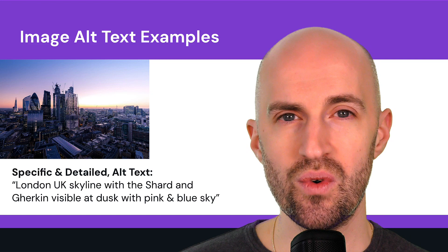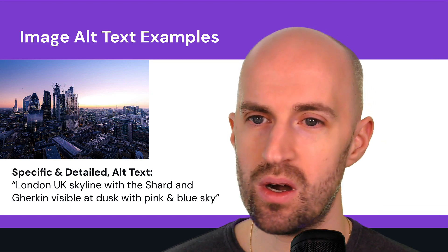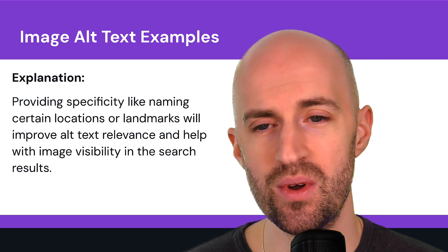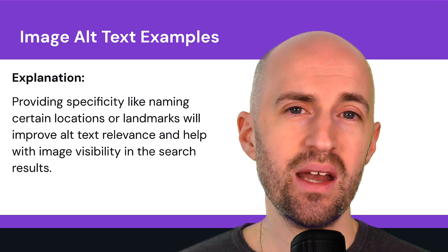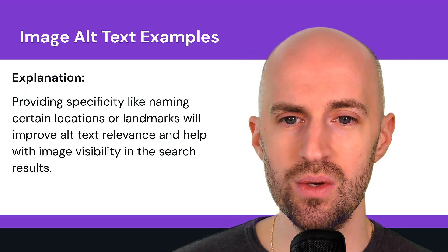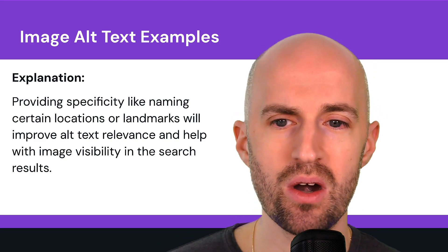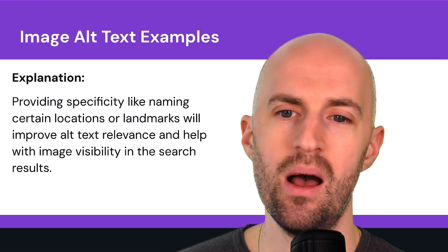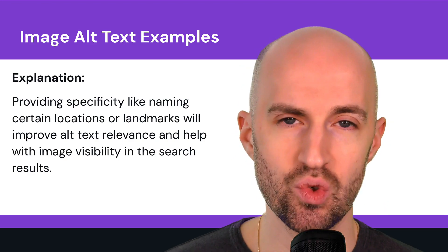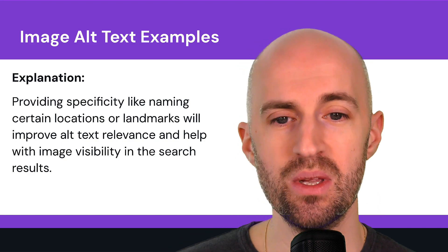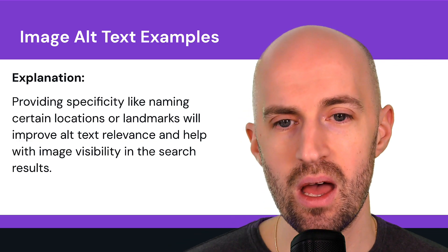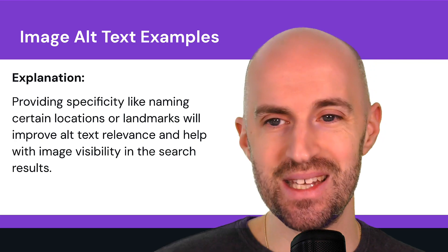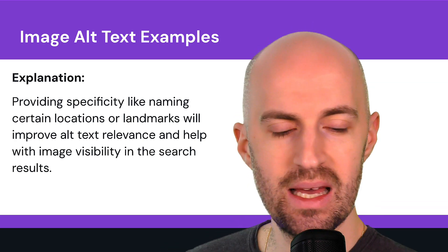That's useful for context and for keywords. By providing specificity — like naming certain locations, landmarks, or objects within the image — you improve the alt text relevance and help with image visibility in the search results. So always try to be specific and detailed when writing your alt text.